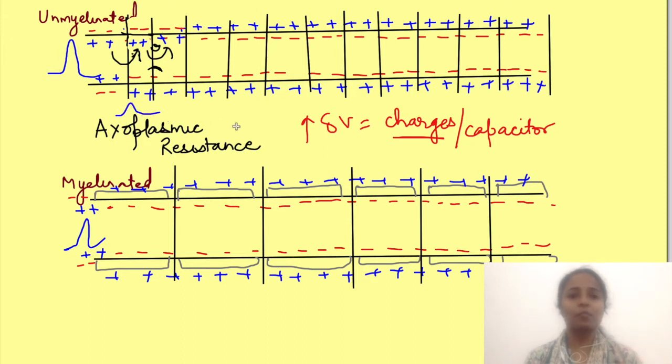This resistance varies depending on the diameter of the axon. More the diameter, lesser the resistance and hence lesser loss of potential. So for thinner neuron it will cause lesser charge change in the neighboring region compared to a thicker neuron in the same time.